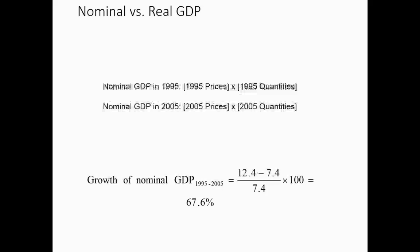Let's think about how we calculate nominal GDP in 2005. GDP is the market value of everything produced. Suppose we produced 10 apples, 20 oranges, 300 watermelons, and we know the prices. Nominal GDP in 1995 is all 1995 quantities times their 1995 prices added up. Nominal GDP in 2005 is 2005 prices times 2005 quantities. To calculate the growth in nominal GDP between them, we just take the growth rate — the difference — exactly as we talked about.